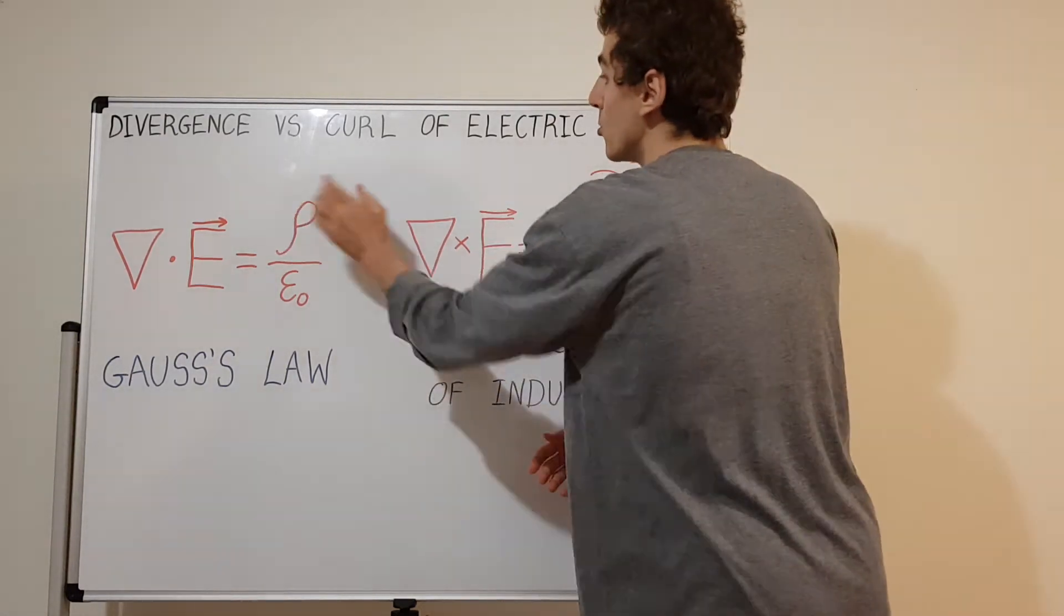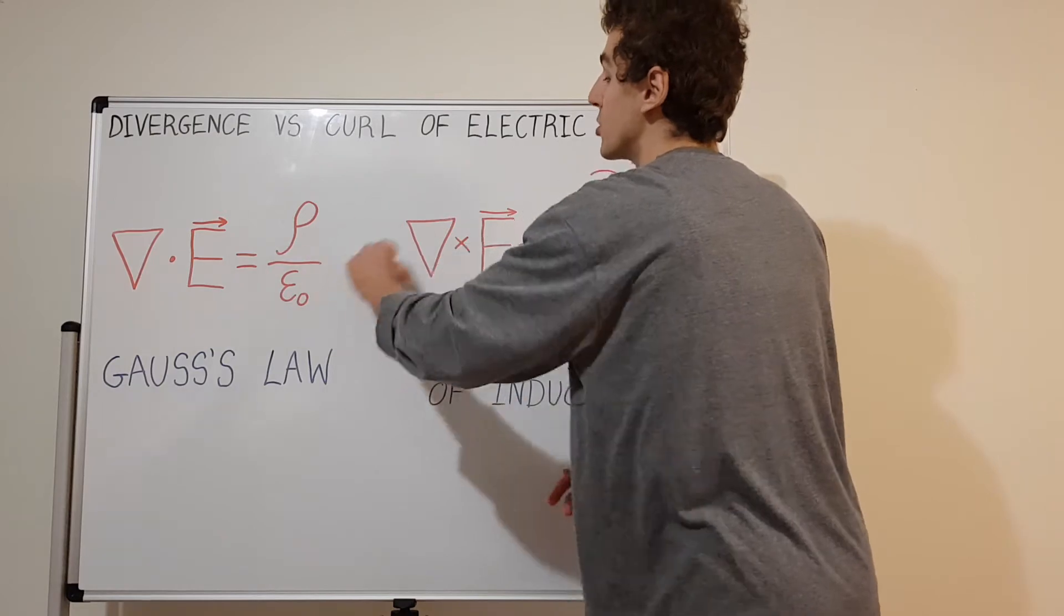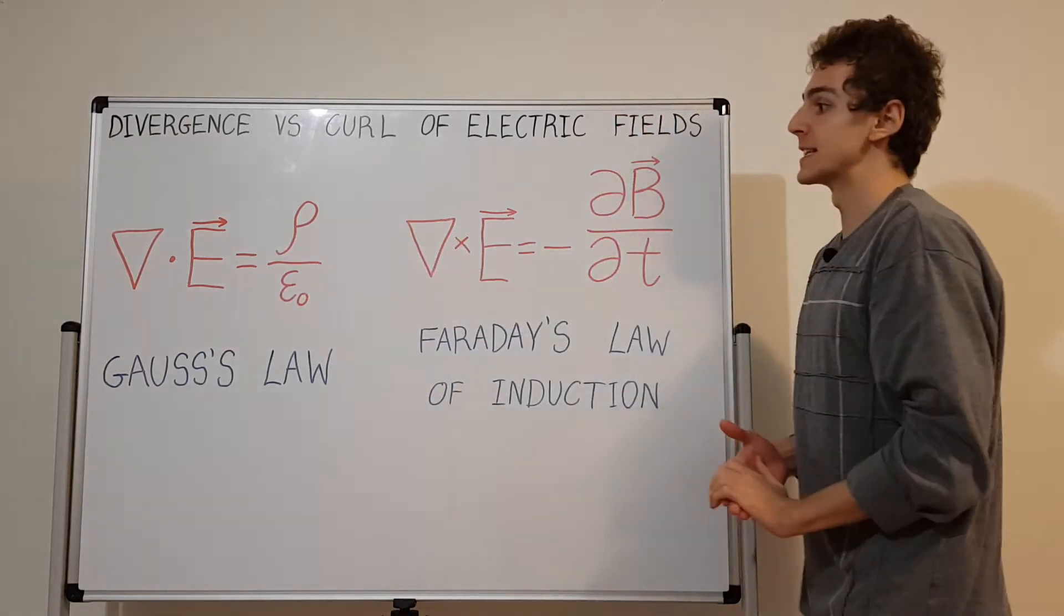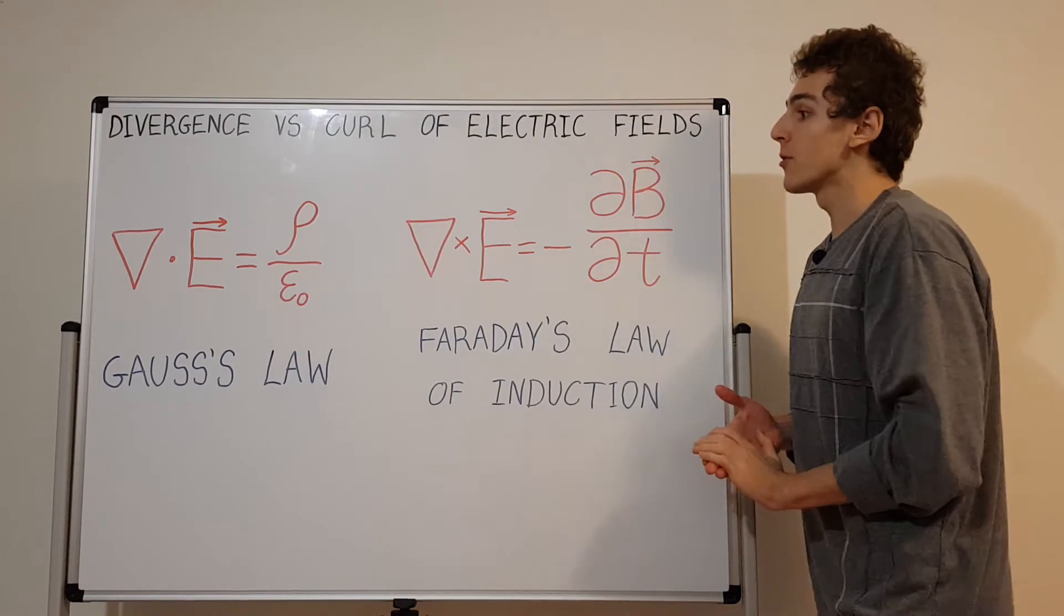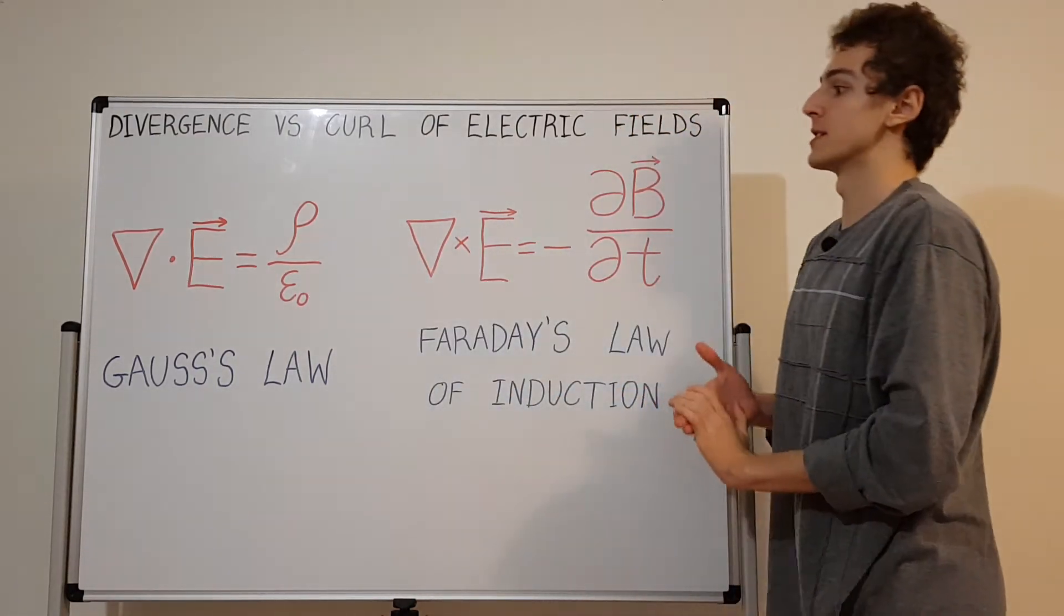If there's no charge at all, if the charge density is zero, meaning rho equals zero, then the divergence is also equal to zero.